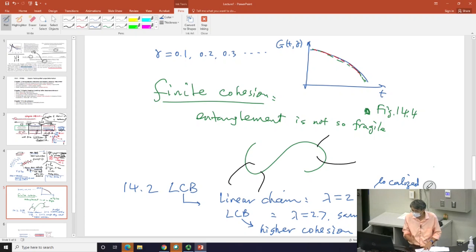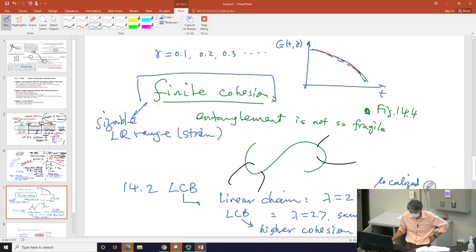This is really all I have to say about this very short chapter 14. We speak basically in this 14 about finite cohesion, about the fact there is a sizable linear response range. When we say range, of course, that's the range in strain.